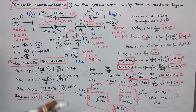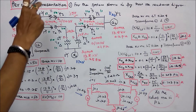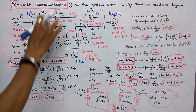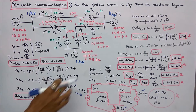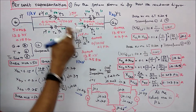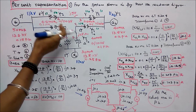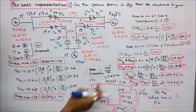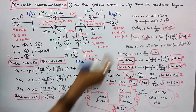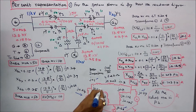Next, the per unit reactance of transformers T1 and T2. Both have the same rating so the value will be the same. Per unit = 0.1 × (11/11)² × (50/45) = j0.1. So T1 and T2 are each j0.1 per unit.